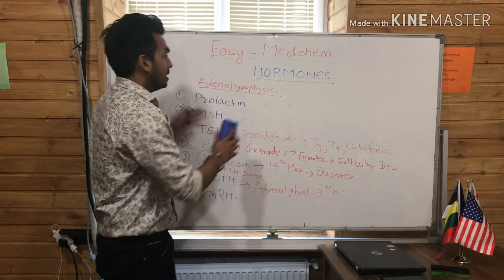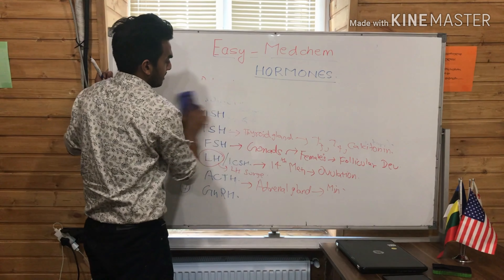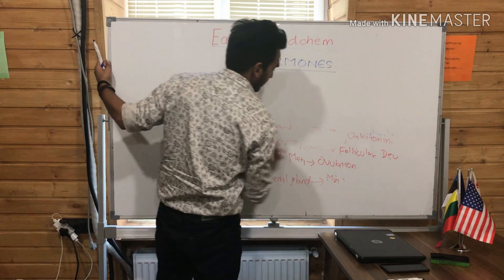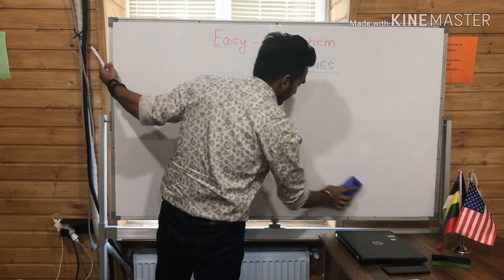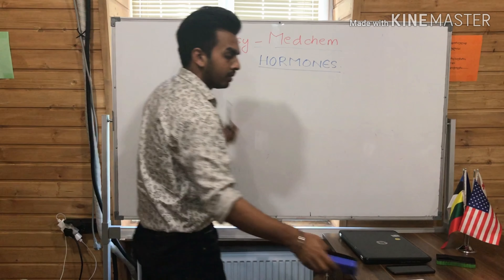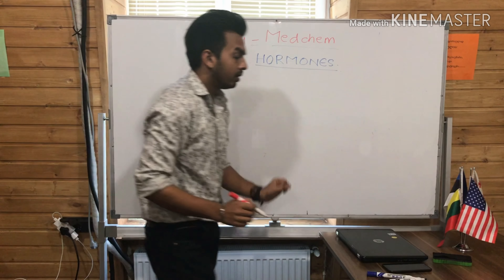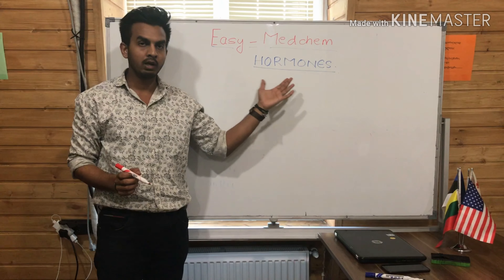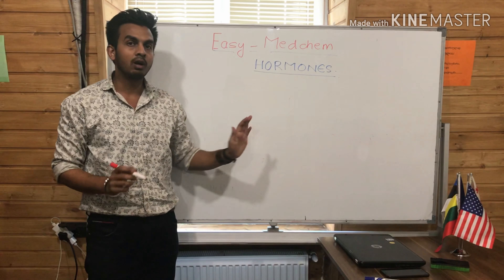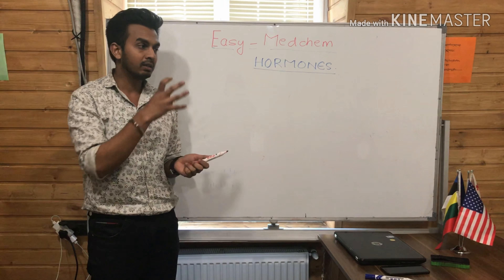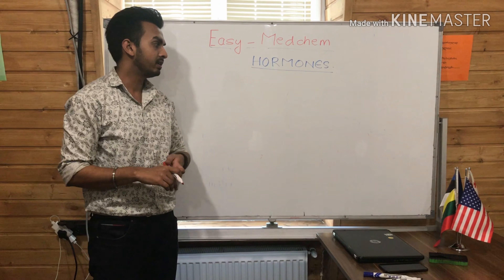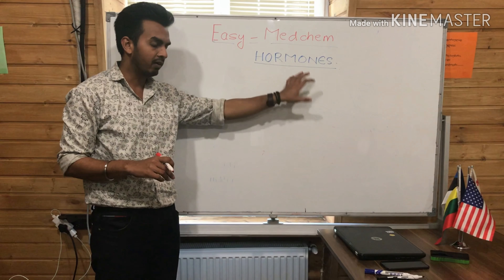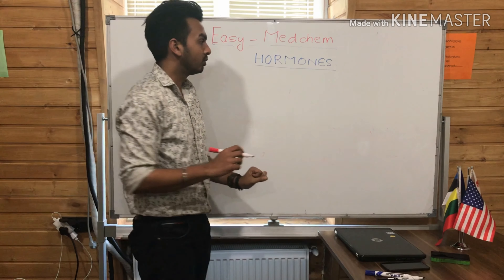The sixth one is Adrenocorticotropic Hormone (ACTH). This ACTH will target the adrenal gland, stimulating it to produce mineralocorticoids, sex corticoids, etc., which we will discuss later in this section of the video.